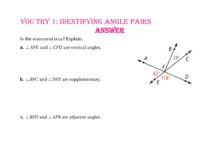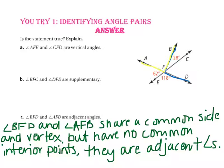Part C says angle BFD and angle AFB are adjacent angles. Since the two angles share ray FB and a common vertex but do not have common interior points, angle BFD and angle AFB are adjacent angles — true.